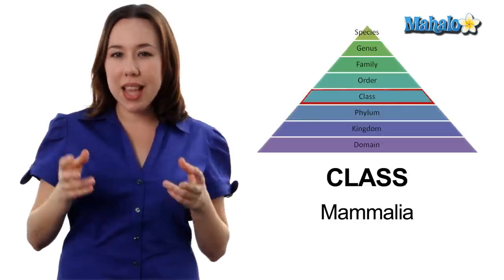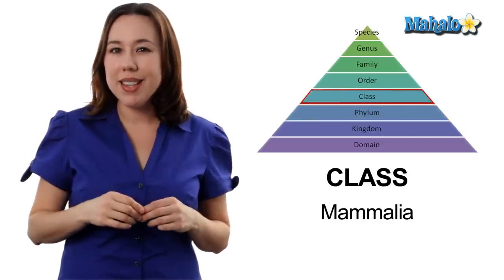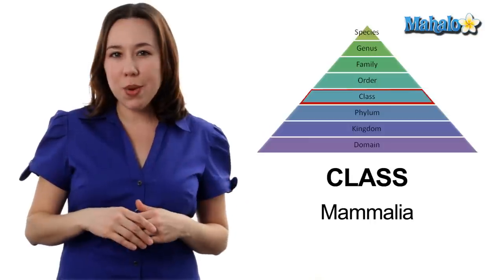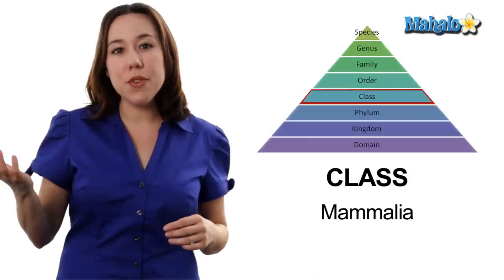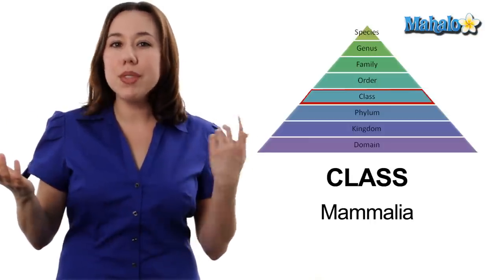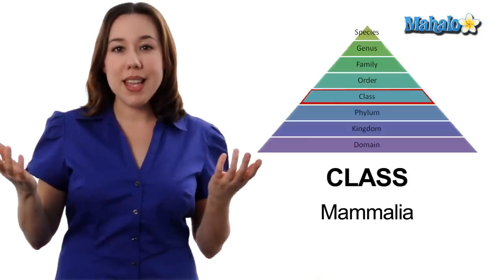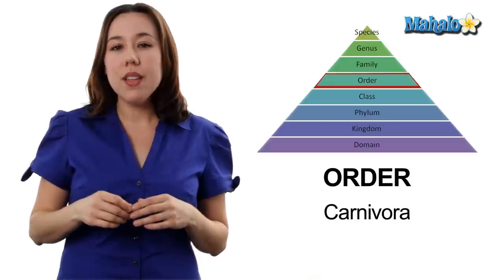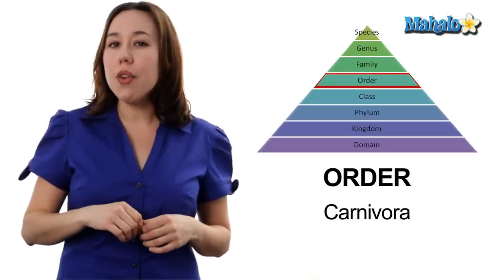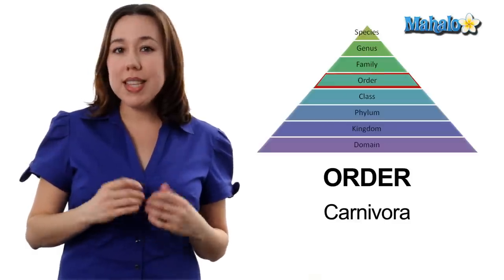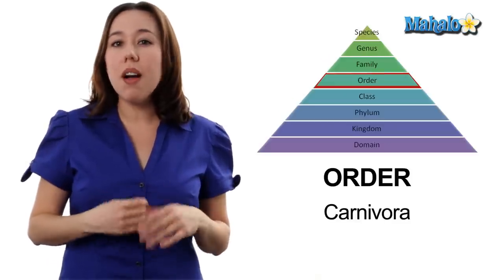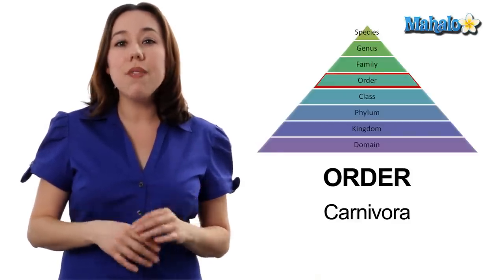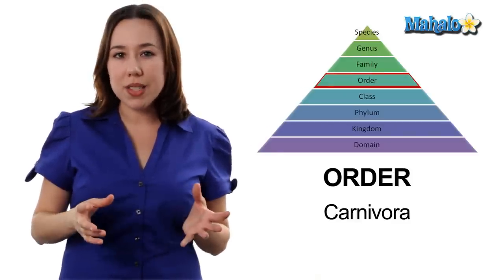Then we're going to have class Mammalia. These are mammals — organisms that have fur and produce milk. Next we're going to have order. The order is Carnivora. This means that our mountain lions belong to an order of all carnivores.